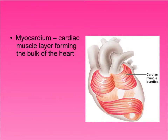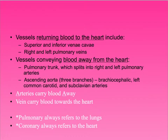Vessels returning blood to the heart come in through the superior and inferior vena cava and the right and left pulmonary veins. The vena cava comes from the body; the pulmonary veins come from the lungs. When blood leaves the heart, it goes through the pulmonary trunk to each lung, or through the ascending aorta via three branches: the brachiocephalic, the left and right common carotid, and the subclavian arteries. Arteries always carry blood away from the heart; veins carry blood toward the heart.